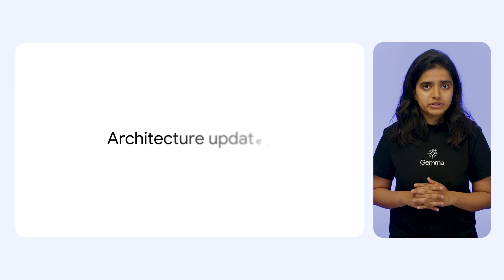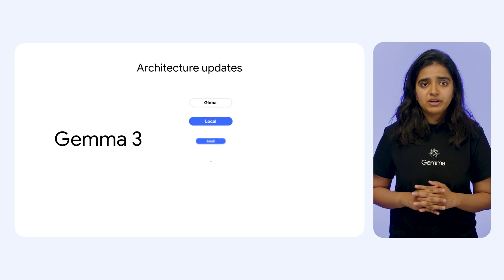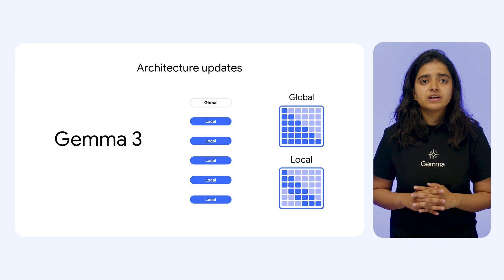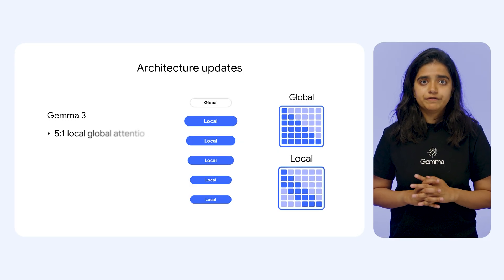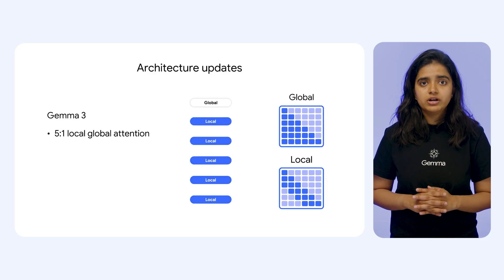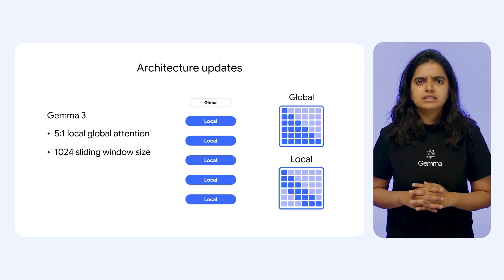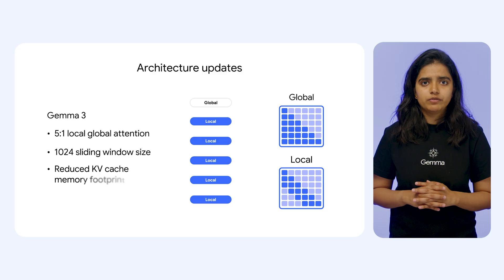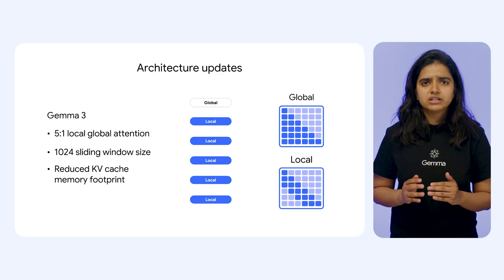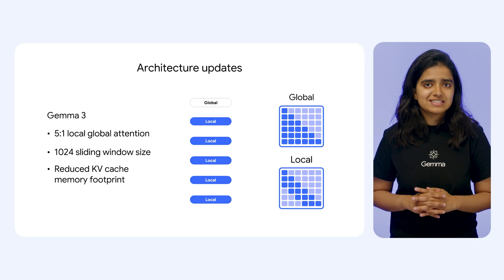Handling such long sequences inherently increases a model's memory footprint, particularly for the KV cache. To mitigate this, Gemma 3 models incorporate specific architectural optimizations. There are now five local attention layers for every global attention layer. Furthermore, the window size for these local attention layers has been set to 1,000 tokens, down from 4,000. These design choices significantly reduce memory overhead to almost only a third of the memory, enabling Gemma 3 to efficiently support its extensive context lengths.